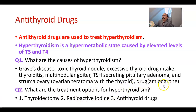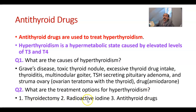Some drugs, like amiodarone — an antiarrhythmic drug — may cause hyperthyroidism, and sometimes even hypothyroidism. What are the treatment options for hyperthyroidism? These include thyroidectomy (surgical resection of the thyroid gland), radioactive iodine (which damages the functional structure of thyroid follicular cells), and antithyroid drugs.